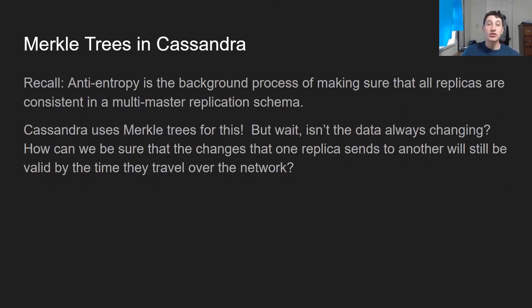In Cassandra, we have anti-entropy. Merkle Trees are really useful for determining the differences between two replicas, and as a result determining the smallest unit of change that can be sent over the network, in order to ensure they are eventually consistent. However, there's a potential issue — isn't the data always going to be changing? You might perform anti-entropy and by the time the data gets there, it's already stale. Cassandra actually does this anti-entropy process not on the raw data itself, not on the keys and values, but instead on those immutable sstable files that are part of Cassandra's LSM-Tree-based architecture.